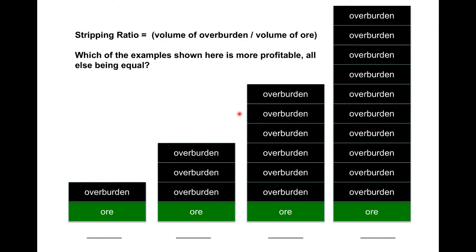When we looked at overburden previously, we discussed the stripping ratio: overburden divided by the amount of ore-grade rock. The lower the stripping ratio, the less overburden you have; the higher the stripping ratio, the more overburden. Mines increase their profitability by reducing the amount of overburden within the safety boundaries of an open pit or underground mine infrastructure.